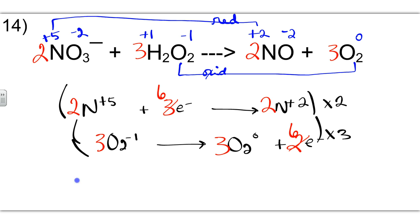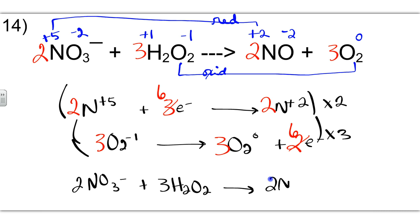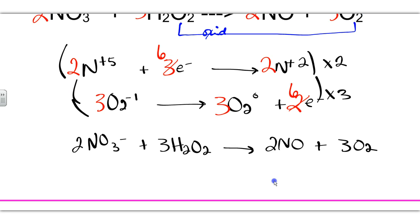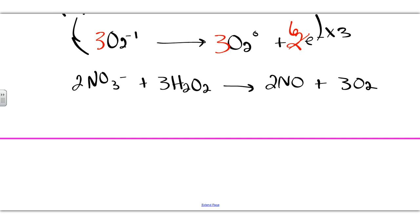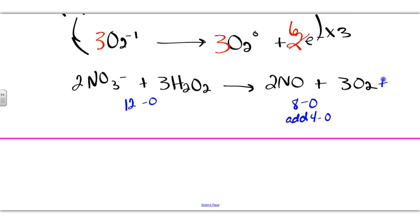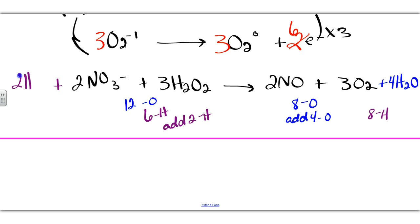The new equation looks like this. Make sure that masses are balanced: 2 nitrogens on the left, 2 nitrogens on the right. For oxygens: 2 times 3 is 6, plus 3 times 2 is 6, so 12 oxygens on the left. Only 8 oxygens on the right, so we need to add 4 more oxygens on the right by adding 4 waters. Now balancing hydrogens: on the right we have 8 hydrogens, and on the left we have 3 times 2 is 6 hydrogens, so we need to add 2 more — plus 2 H⁺.